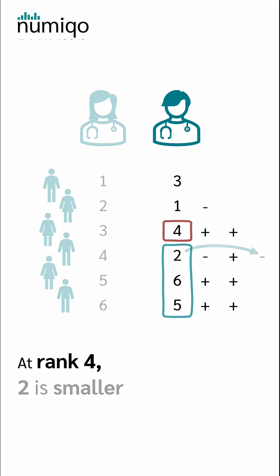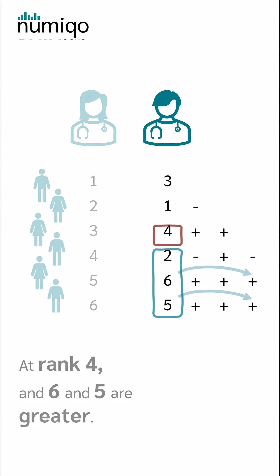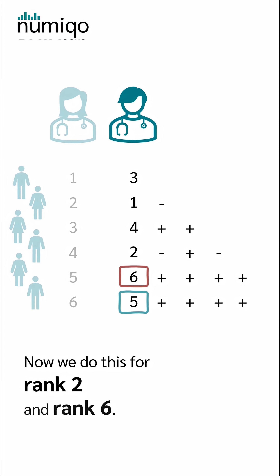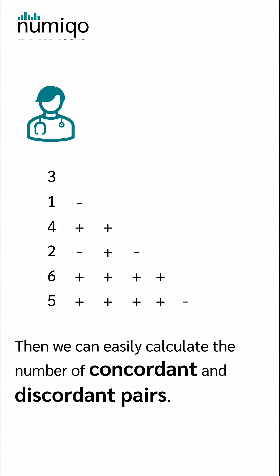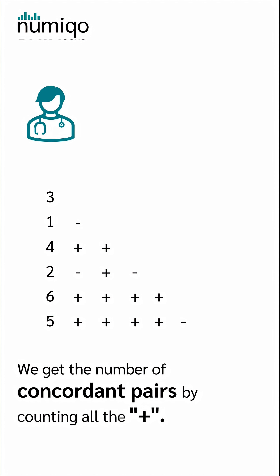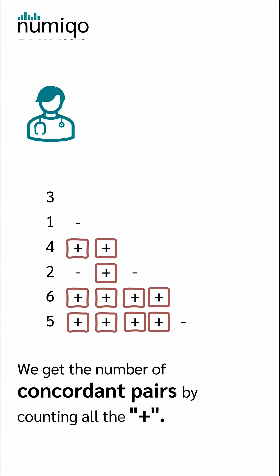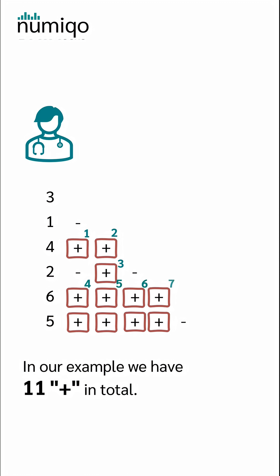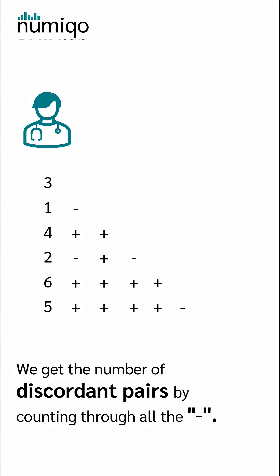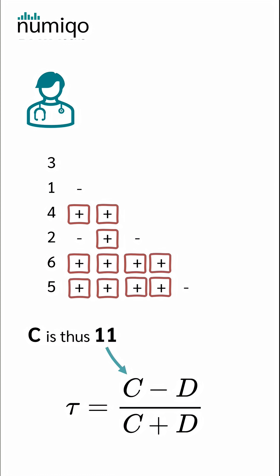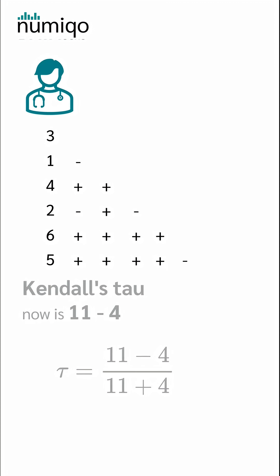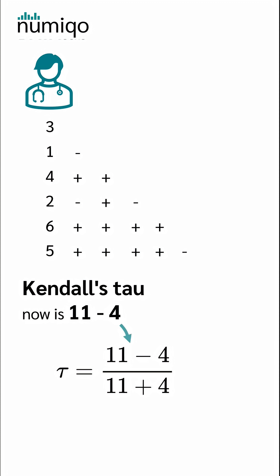At rank 4, 2 is smaller and 6 and 5 are greater. We then do this for rank 2 and rank 6. We get the number of concordant pairs by counting all the pluses — in our example we have 11 pluses in total. We get the number of discordant pairs by counting all the minuses — in our example we have 4 minuses. So c is 11 and d is 4, and Kendall's Tau is 11 minus 4 divided by 11 plus 4.